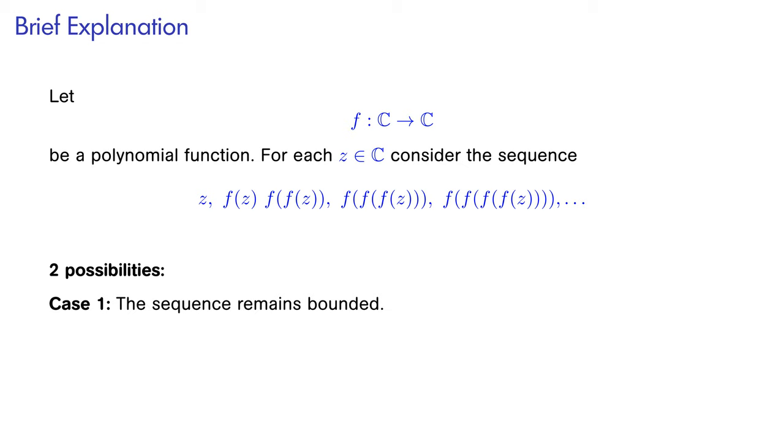And now there are two possibilities. Either the sequence remains in a bounded area of the complex plane, or its magnitude becomes arbitrarily large.